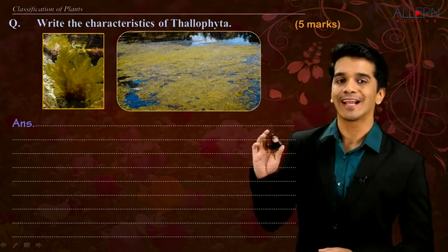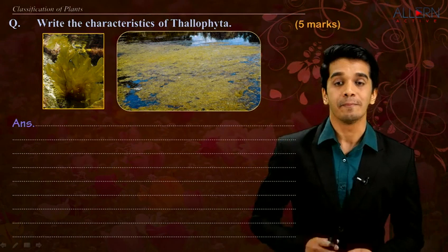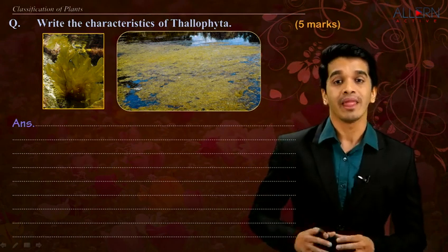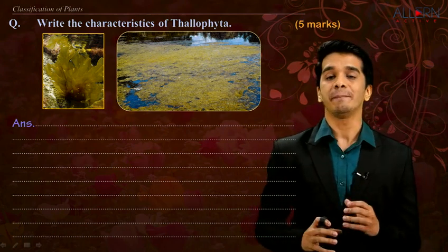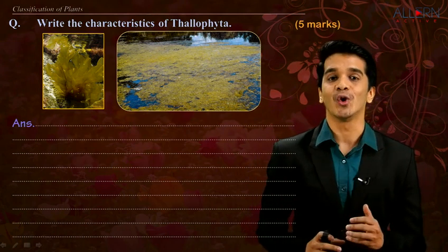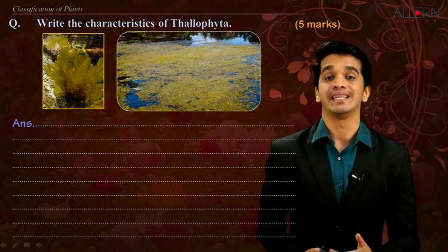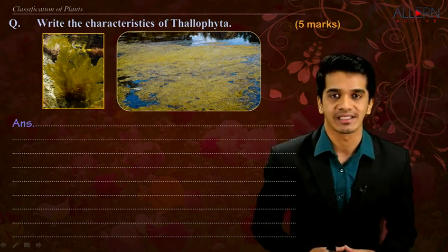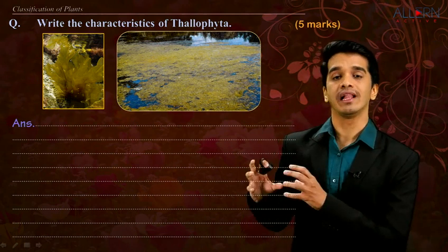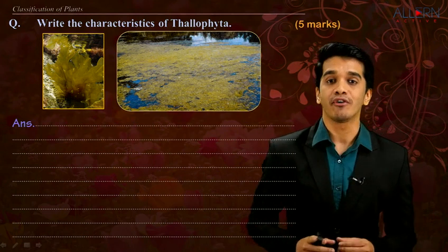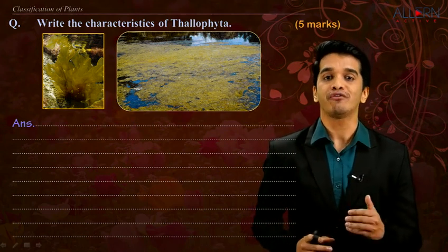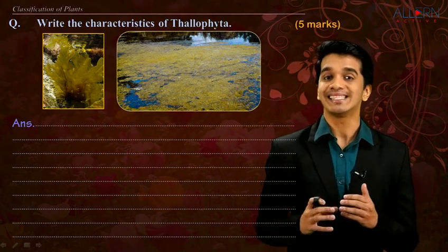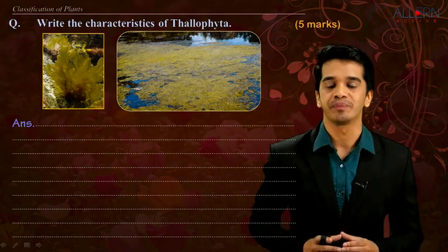As you can see the green patch over here, they are nothing but algae. The color is green because of a pigment called chlorophyll, which is present inside the spiral chloroplast. Because of this chlorophyll, they can perform autotrophic mode of nutrition — that means they can synthesize their own organic food.